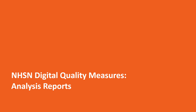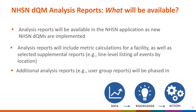Thank you, Derek. Now that we've reviewed the data flow for NHSN's digital quality measures, we will discuss more information as it relates to data analysis reports for DQMs. NHSN analysis reports will be available in the NHSN application as new NHSN DQMs are implemented. Analysis reports will include metric calculations for a facility as well as select supplemental reports. One example of a supplemental report may be a line level listing of events by location or a line listing of all encounters eligible for a measure. Additional analysis reports, such as user group reports, may be available according to a phased approach after an initial module release.